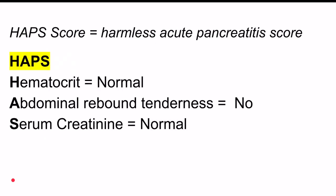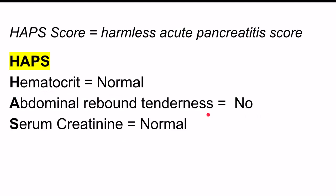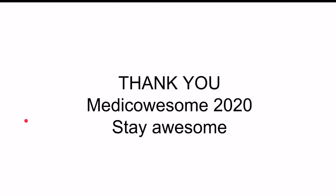The HAPS score — Harmless Acute Pancreatitis Score — mnemonic is HAPS itself: H for hematocrit, A for abdominal rebound tenderness, and S for serum creatinine. Serum creatinine and hematocrit are normal and there is no abdominal rebound tenderness. Thank you for watching.